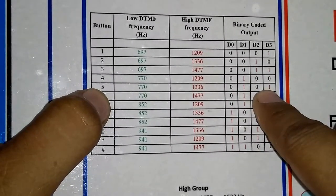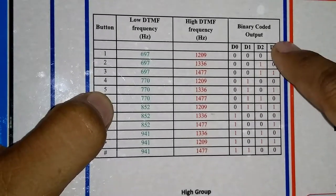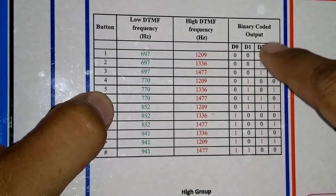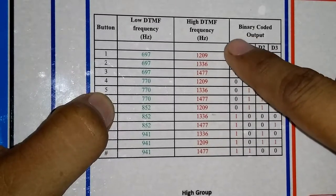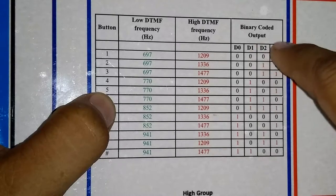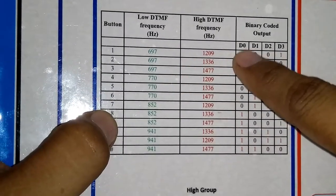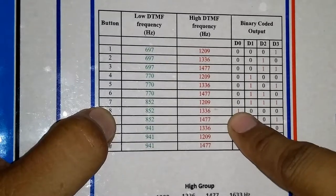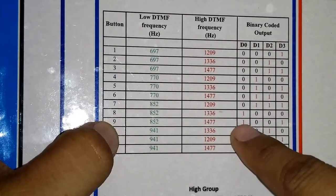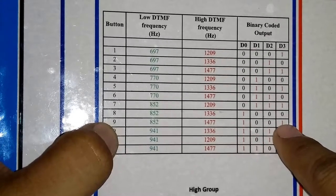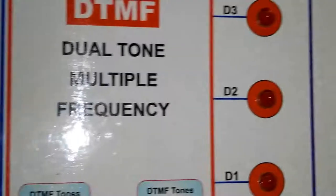The outputs follow a binary weighting scheme: D3 has a value of 1, D2 has a value of 2, D1 has a value of 4, and D0 has a value of 8. So the outputs represent 1, 2, 4, 8. For example, pressing 9 gives 8 plus 1, so D0 and D3 are both on — this is the complete binary sequence.